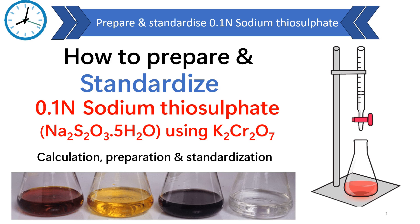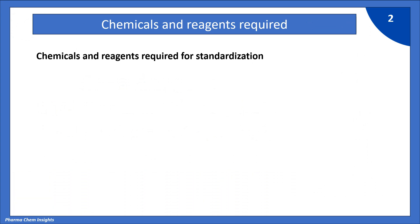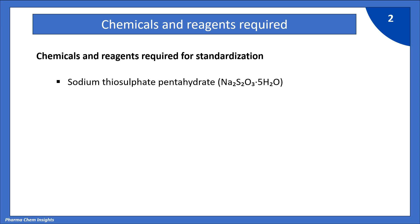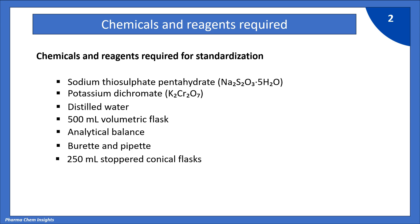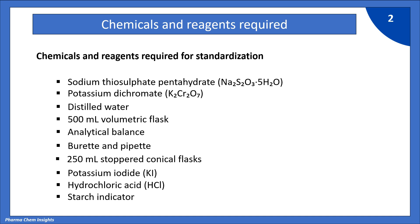Let's get started by going through the materials and chemicals you will need for this experiment. Chemicals and reagents required are: sodium thiosulfate pentahydrate, potassium dichromate, distilled water, 500 ml volumetric flask, analytical balance, burette and pipette, 250 ml stoppered conical flask, potassium iodide, hydrochloric acid, and starch indicator.